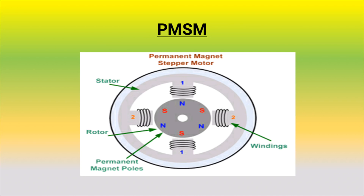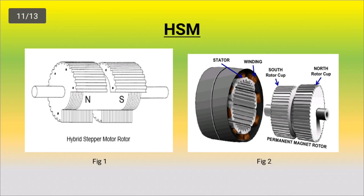This is the Hybrid Stepper Motor. The name is Variable Reluctance Stepper Motor. This is a Permanent Magnet Stepper Motor. You also have to hybridize this — this is a Hybrid Stepper Motor. This is a variable reluctance in the rotor. The two ends are in the center.